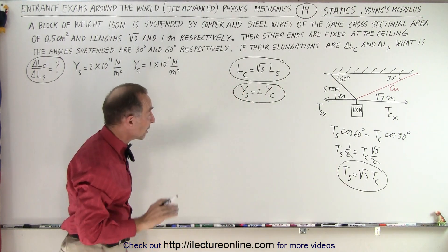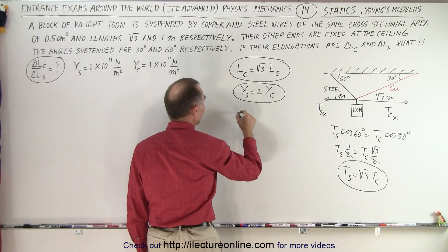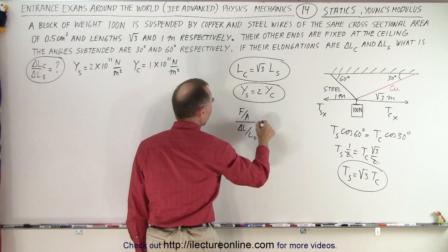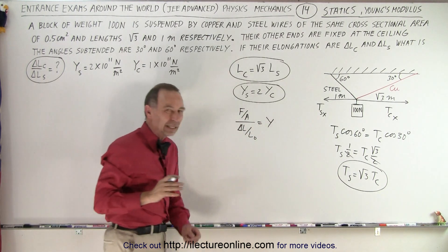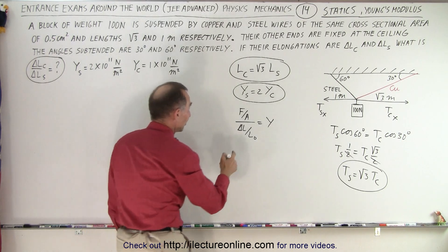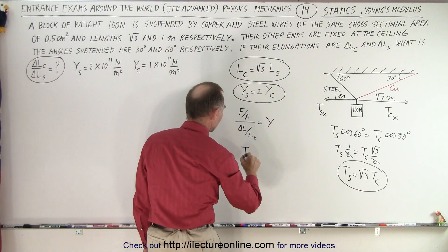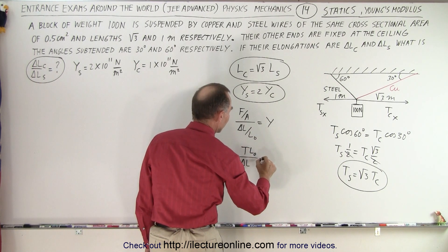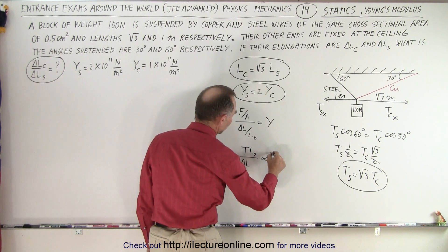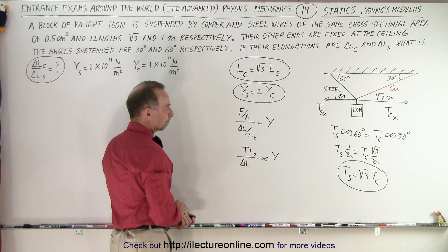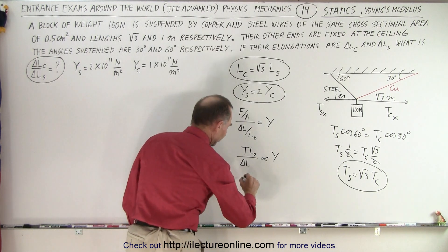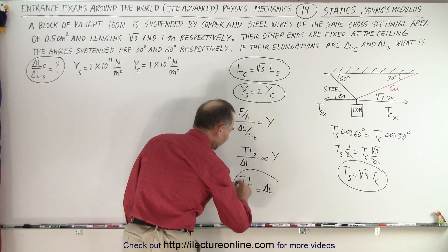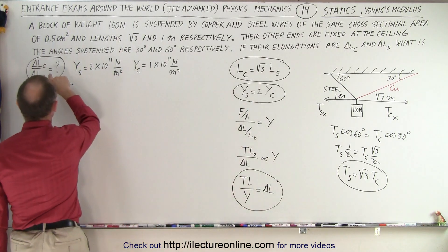Now we have all the relationships we need, because now we're going to define the Young's modulus. We can say that the force per unit area divided by the change in the length over the original length is equal to the Young's modulus. Since the cross-sectional areas are the same for both, instead of F we can use tension. We can say that tension times the initial length is proportional to Young's modulus, and solving for delta L: tension times the original length divided by Young's modulus is equal to delta L. This is the relationship we're going to need to divide one by the other.